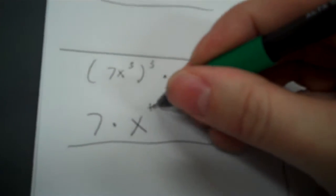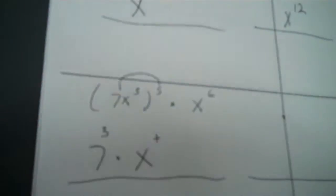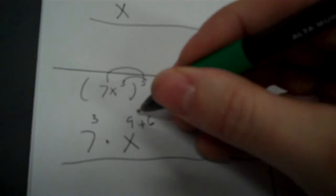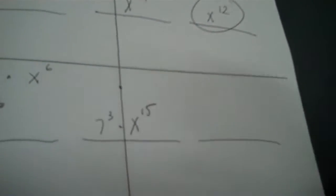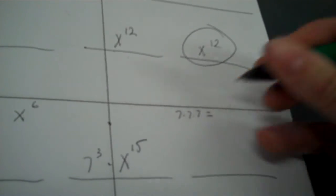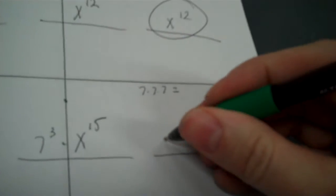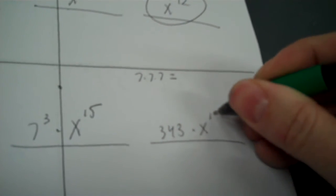The first two are pretty easy. Now the next one has more factors — a factor of seven, a factor of x, and then another x factor, so I know I'm going to have to add the x exponents. Seven to the first, three times three is nine, then plus six. Nine plus six is fifteen. Bring those over: seven to the third times x to the fifteenth. I can simplify seven to the third — seven times seven times seven is 343 — giving 343 times x to the fifteenth.